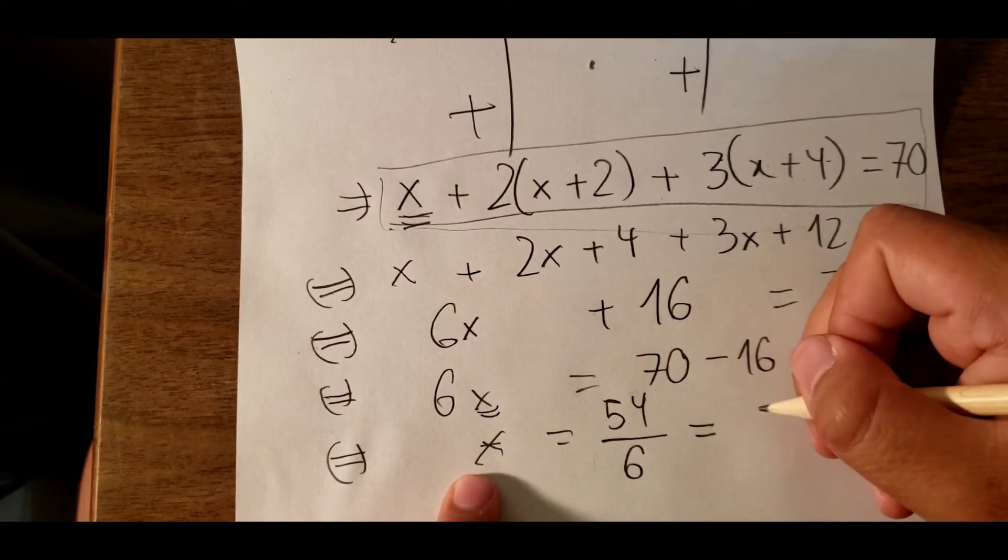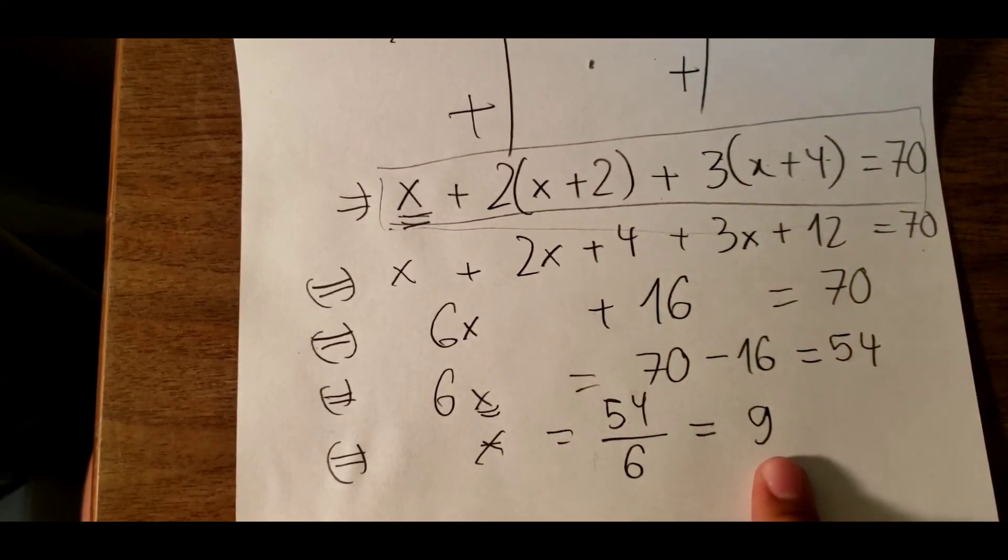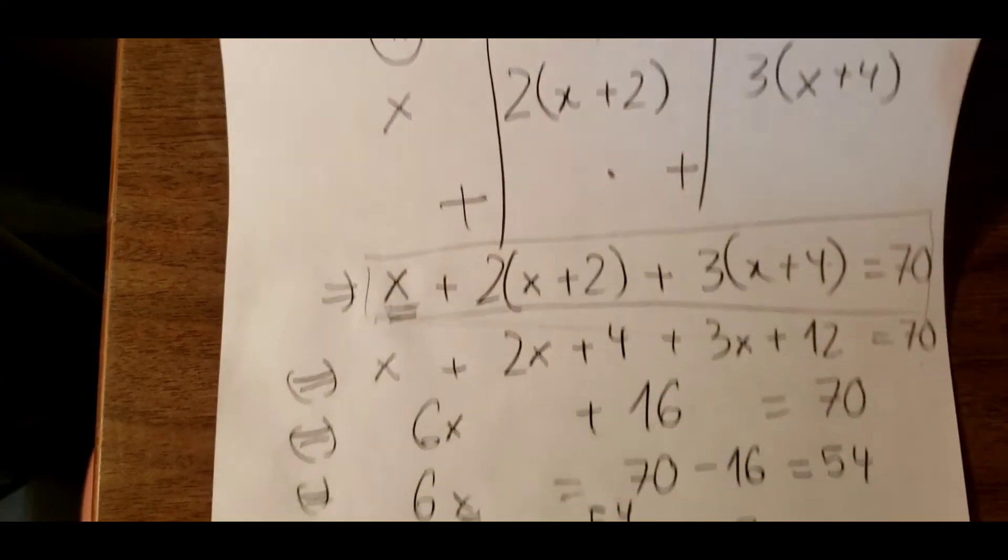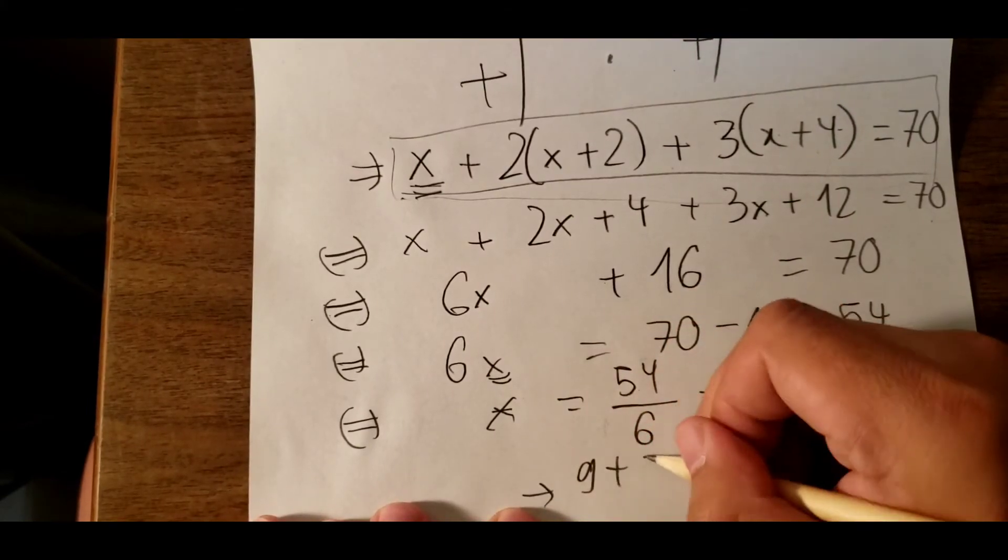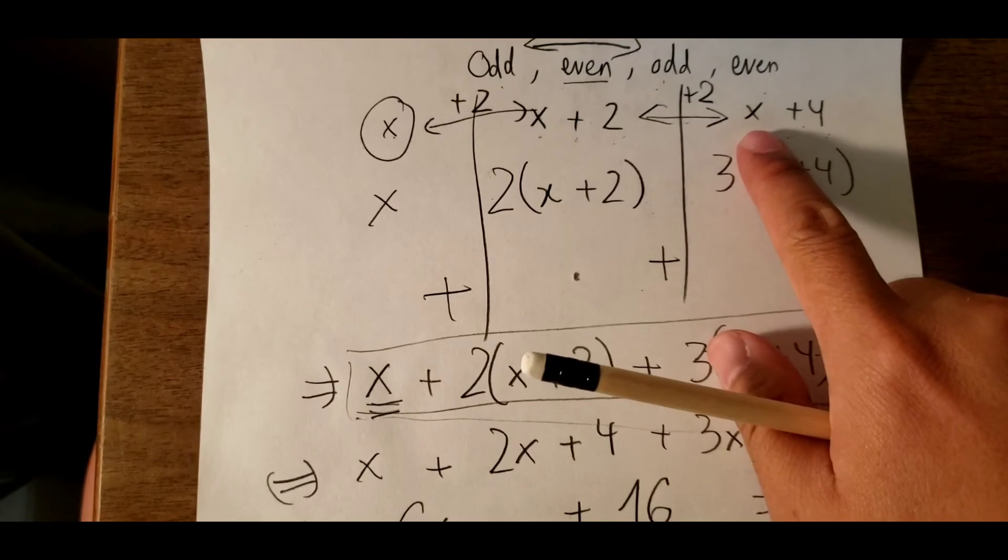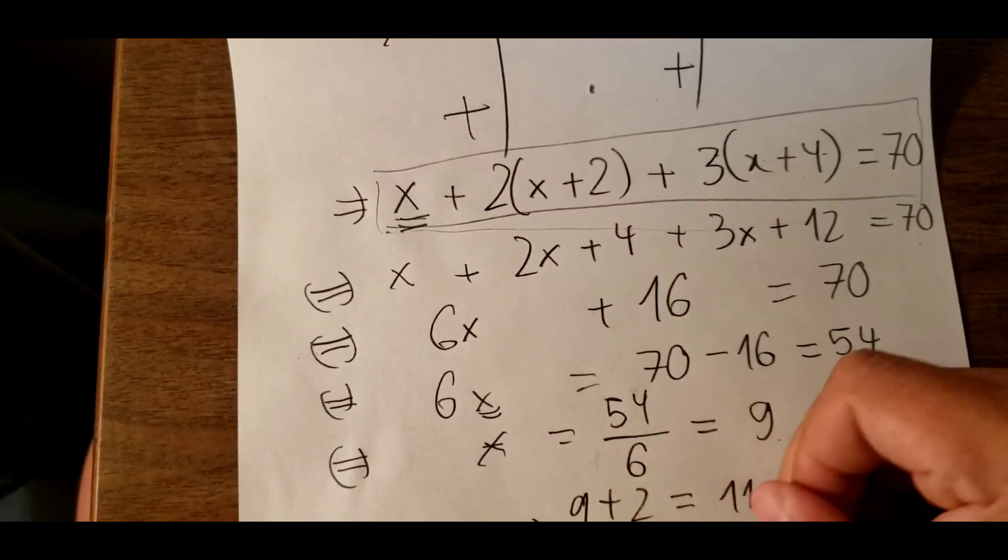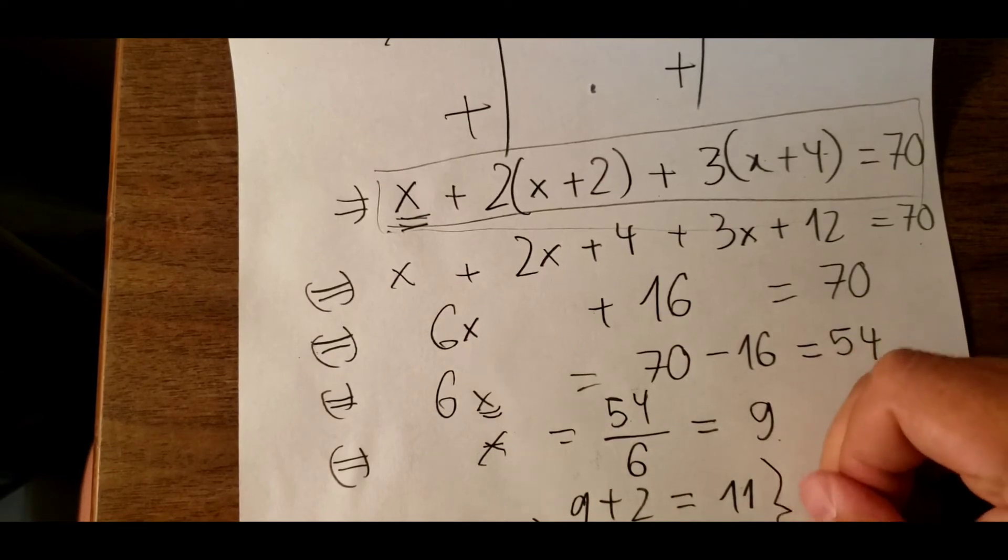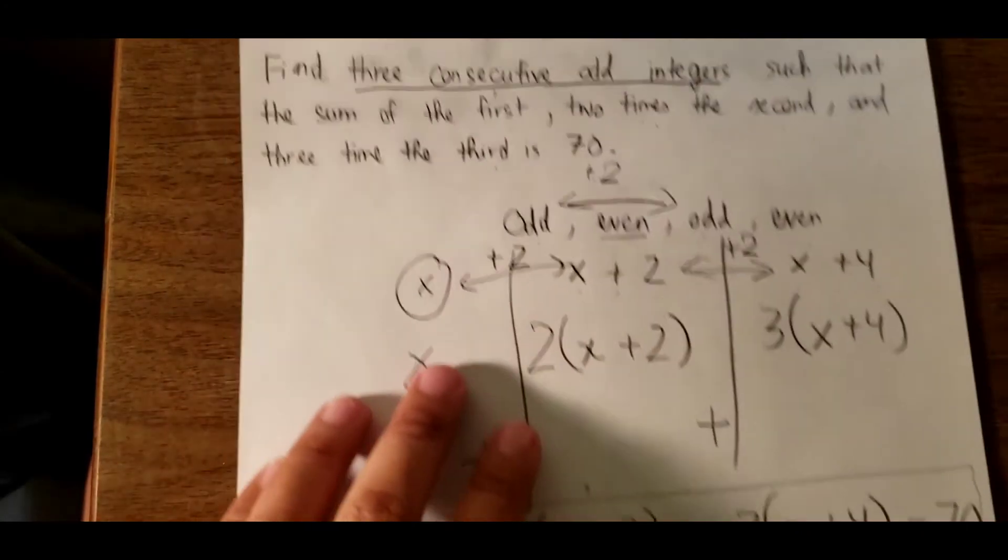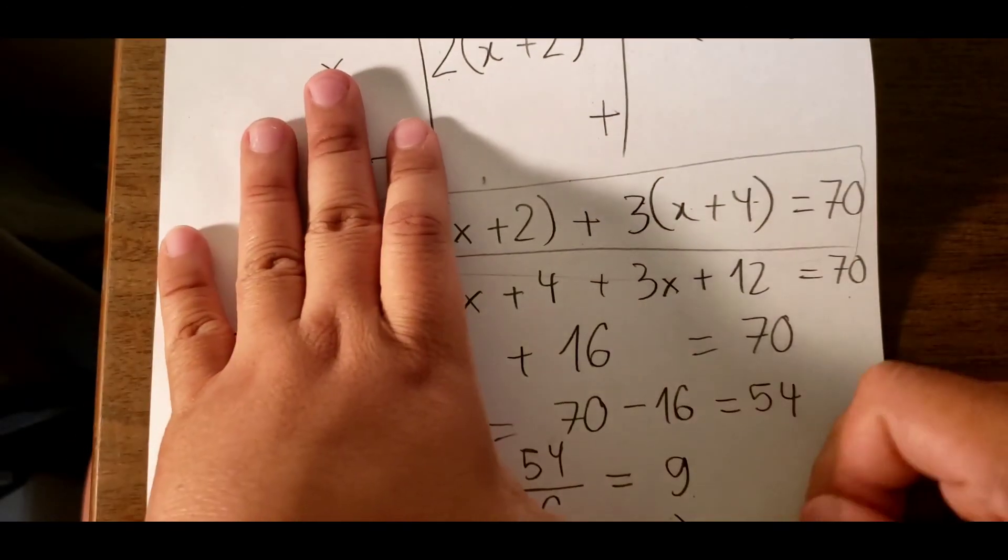So the first integer is 9. After we calculate x equals 9, we can find x plus 2, which is 9 plus 2 equals 11, and 9 plus 4 equals 13. So we can conclude that the three consecutive odd integers are 9, 11, and 13.